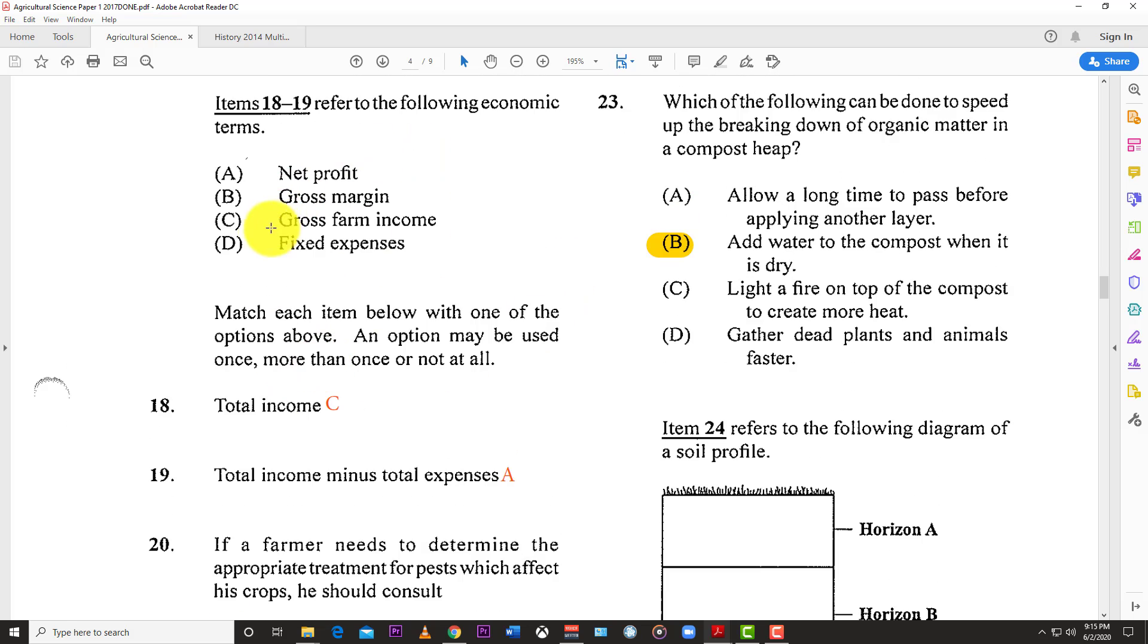Eighteen and nineteen: Match the following economic terms. Total income can also be called the gross farm income. Total income minus expenses, and the result would be your net profit.